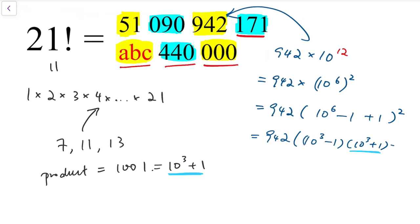so the block that we want is over here, and then plus 1 all squared, so it's just equivalent to 942 mod 1001.